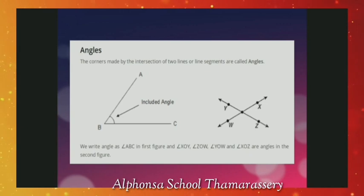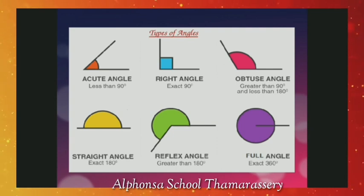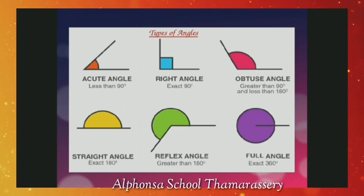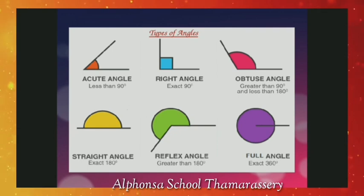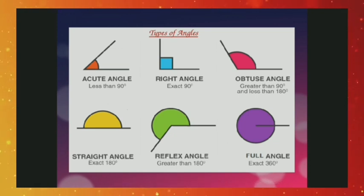What is an angle? Two rays joined with a common endpoint form an angle. The common endpoint is called a vertex. Angles are classified as acute angles, right angles, obtuse angles, straight angles, and reflex angles. An acute angle is between 0° and 90°. An obtuse angle is between 90° and 180°. A right angle is exactly 90°. A straight angle measures 180°. A reflex angle is between 180° and 360°.